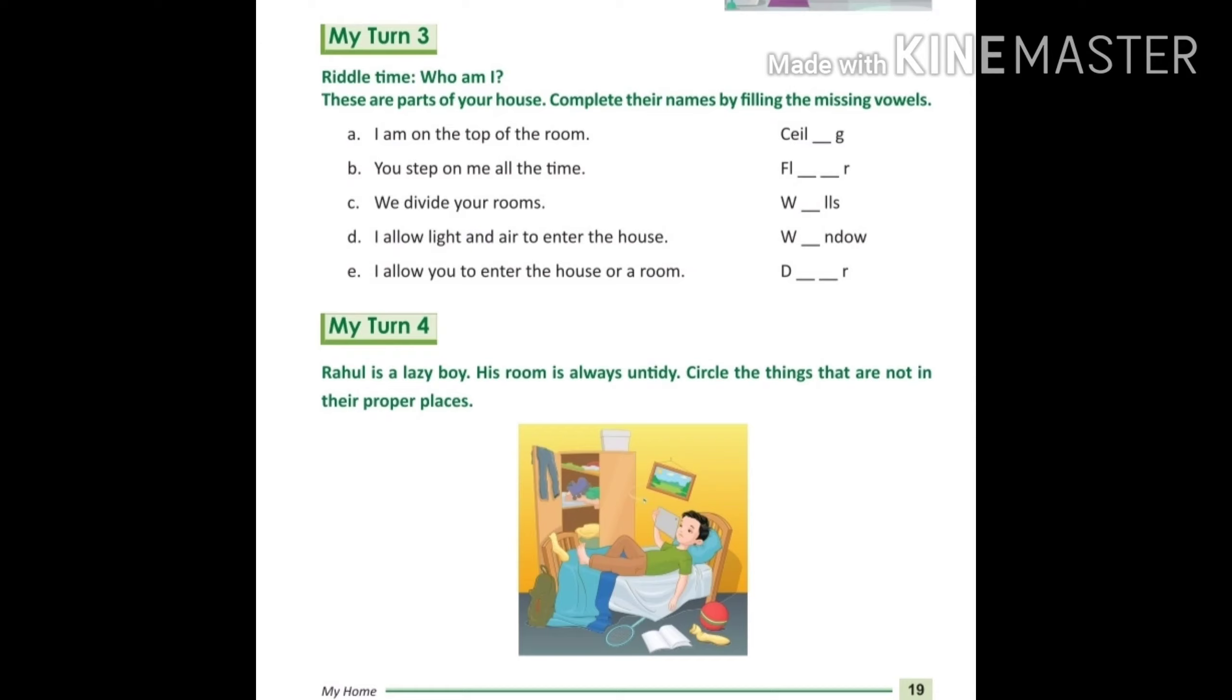As you can see, in his bedroom, books, ball, socks and rackets are lying on the floor. You have to circle these things.